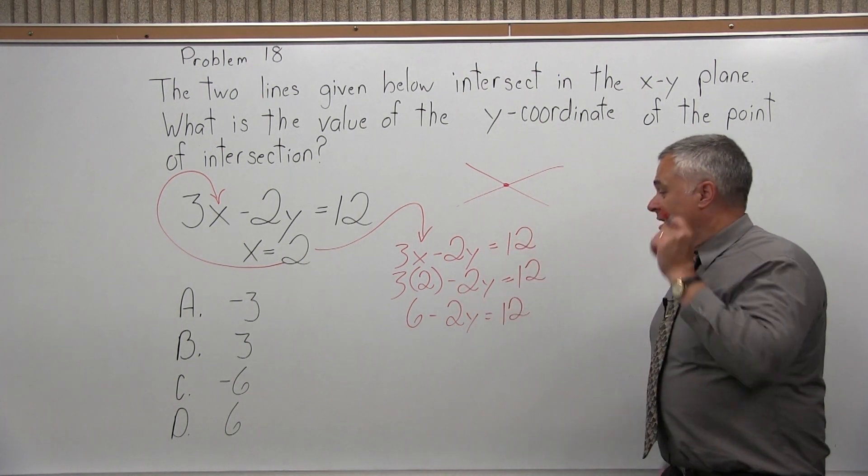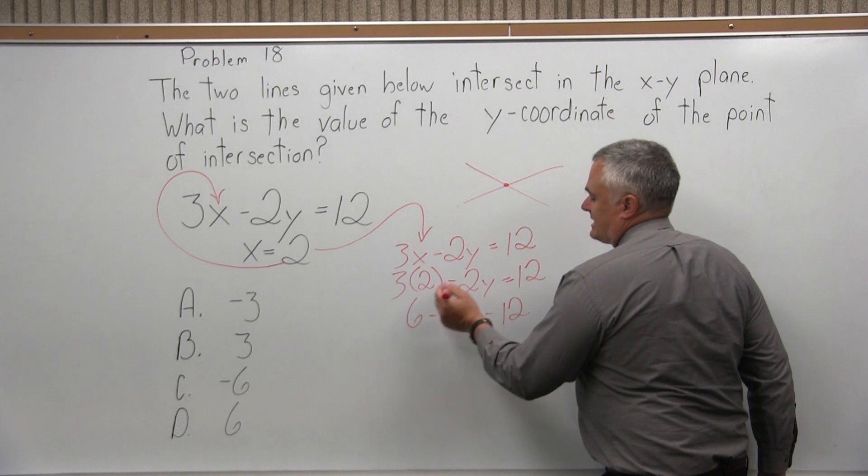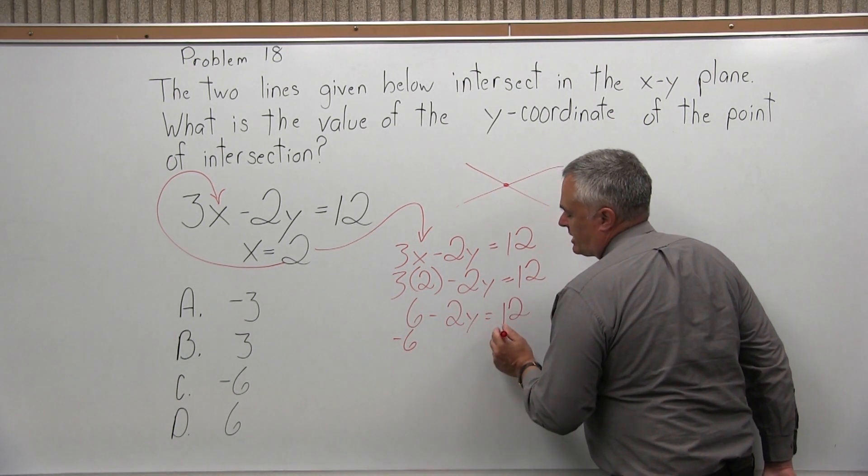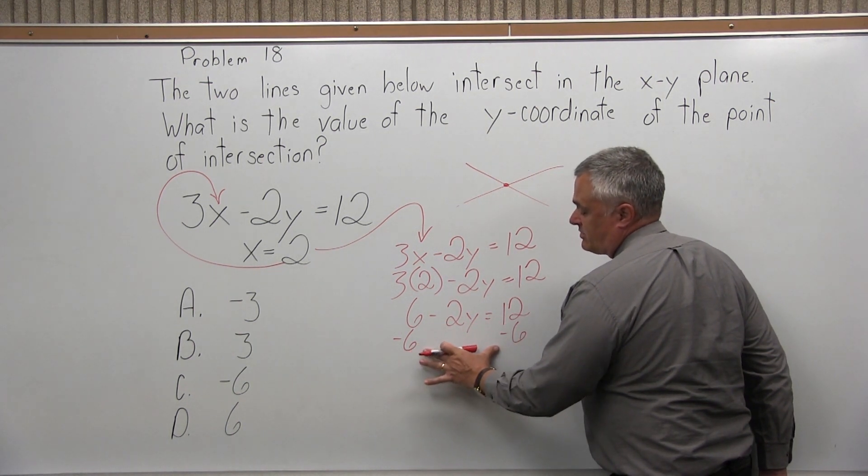Now what I want is numbers on one side, y's on the other. So this minus 6, I want to bring over with the 12. It's an equation. I can do anything I want as long as I do the same on both sides. So on both sides, I'm going to do minus 6.